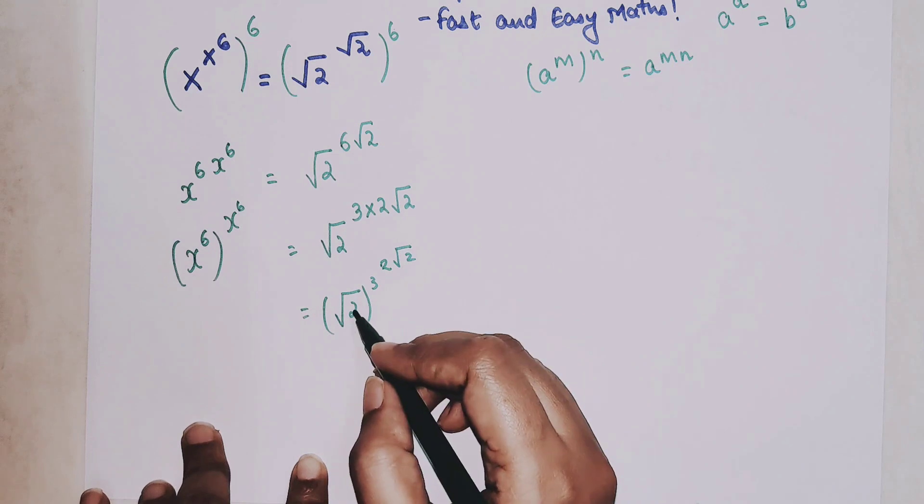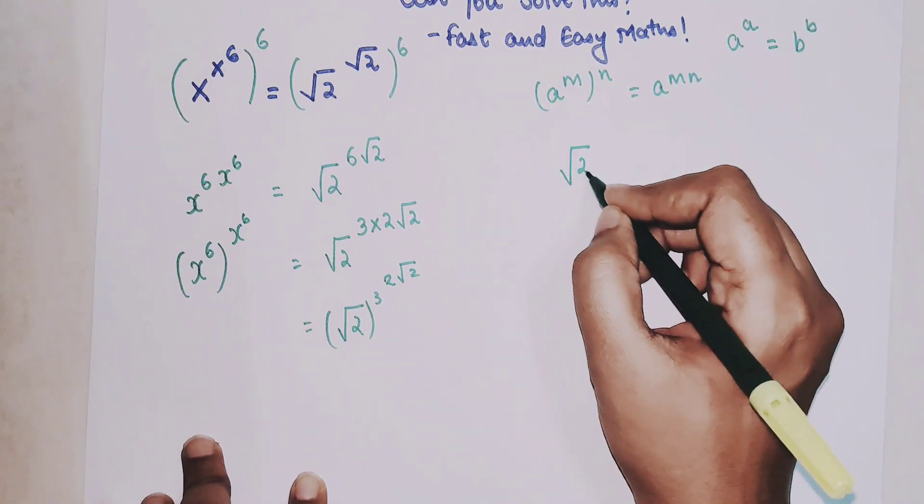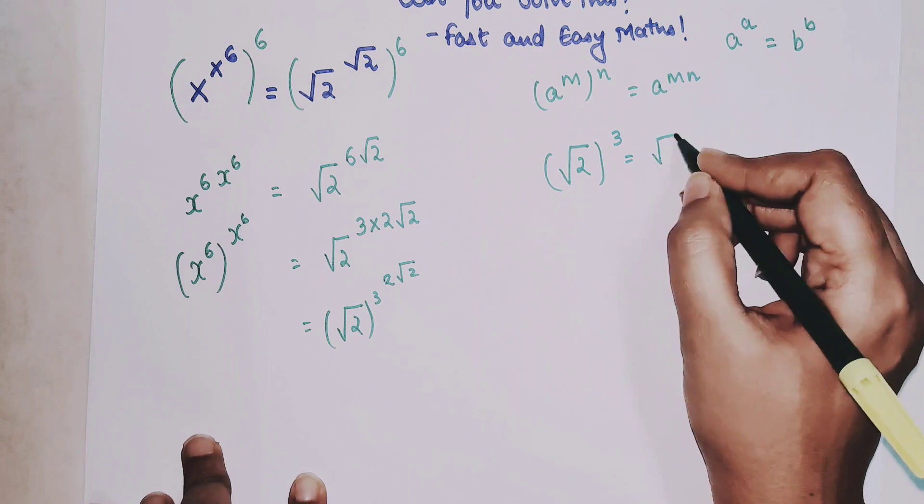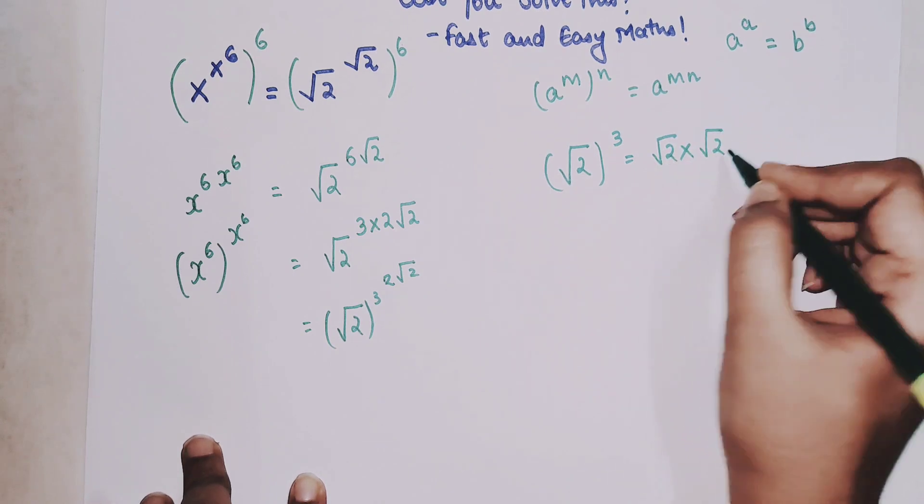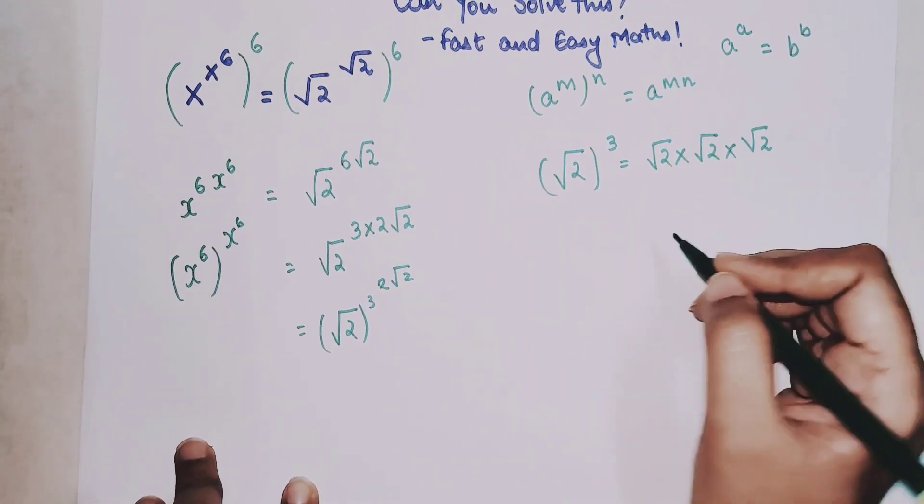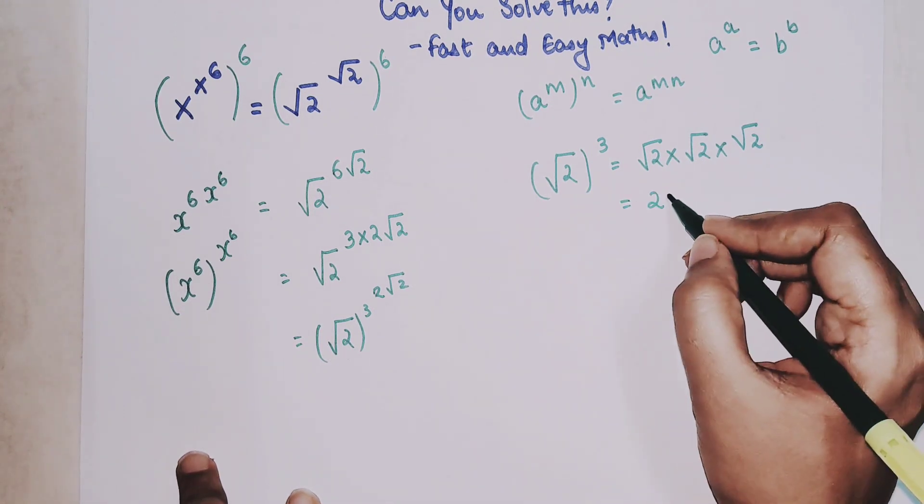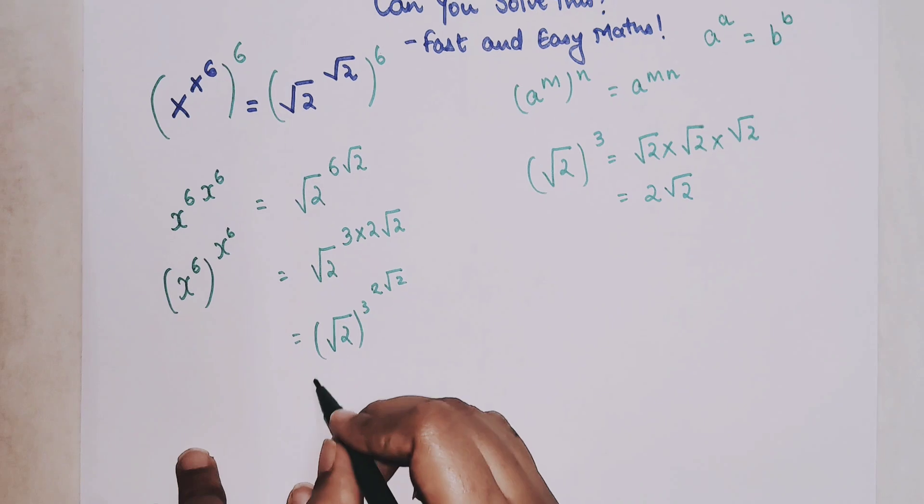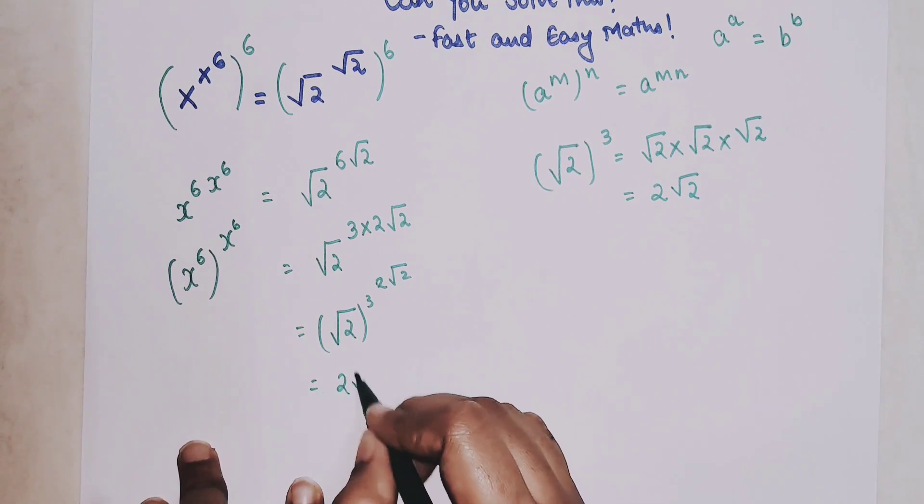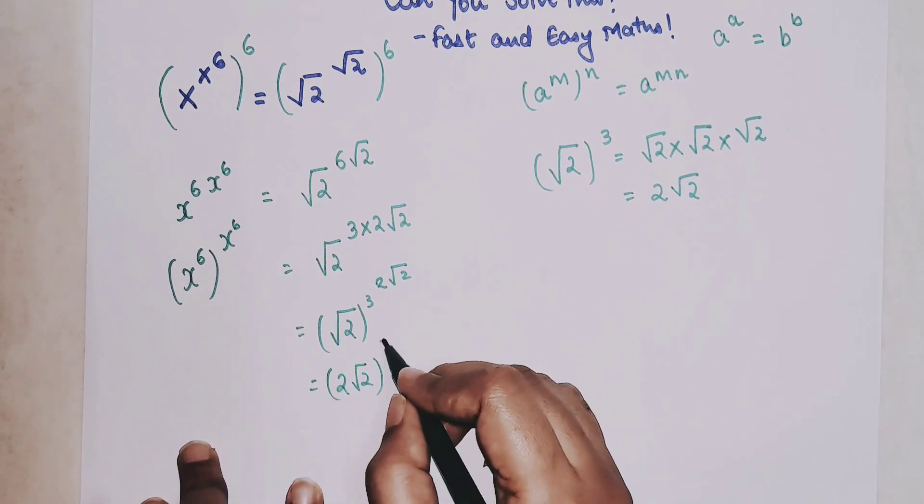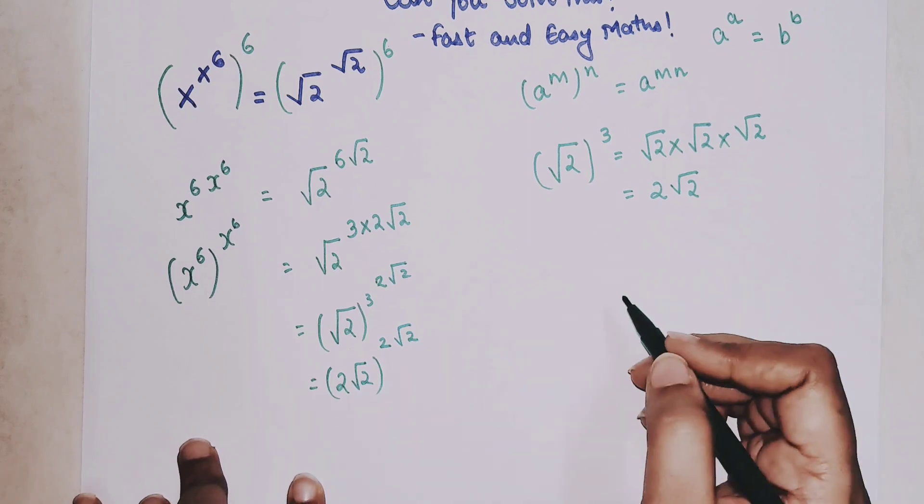So now please understand root 2 cube is nothing but root 2 into root 2 into root 2. So when root 2 and root 2 gets multiplied we get 2 into root 2. So this can be written as 2 root 2 the whole raised to 2 root 2.